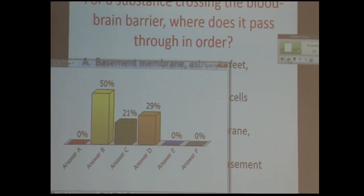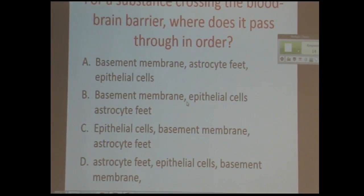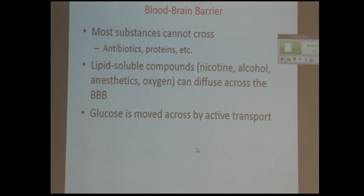So most people chose B. That would actually be incorrect. It is C. That's the order. So for something to go from the blood to the neuron, it has to go past the epithelial cells, past the basement membrane, and through the astrocyte feet.